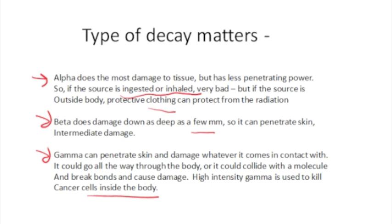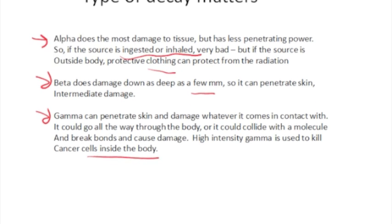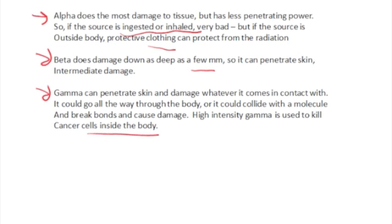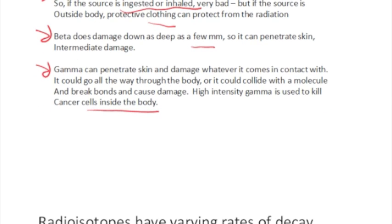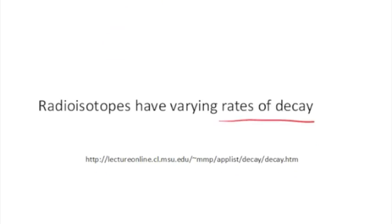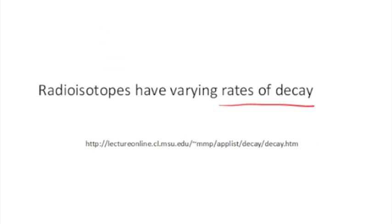So there's something about the penetrating power and whether or not the isotope that you're exposed to gives off alpha, beta, or gamma radiation. And the other factor that affects the biological effect is the rate of decay. How fast does the radioisotope undergo radioactive decay?